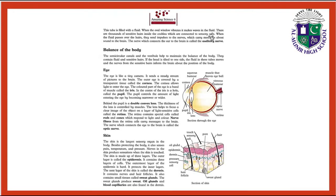There are thousands of sensitive hairs inside the cochlea which are connected to sensory cells. When the fluid passes over the hairs, they send impulses to the nerves which carry messages about sound to the brain. The nerve which connects the ear to the brain is called the auditory nerve.